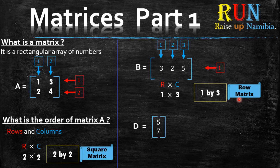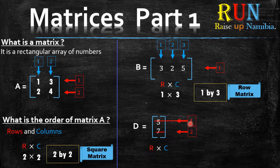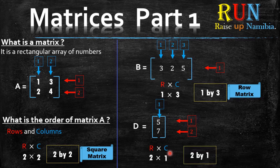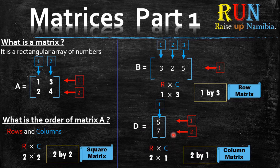Let's take a look at another example — we have matrix D over here. So let's find the order. How many rows does it have? One, two. So we write down the two. How many columns does it have? It only has one column. Now remember from matrix B, we said that whenever a matrix has one row, it's called a row matrix. So what about if a matrix has one column? It's called a column matrix. So this is a two by one matrix, which is a column matrix, because it only has one column.